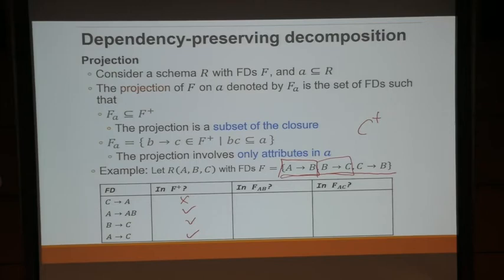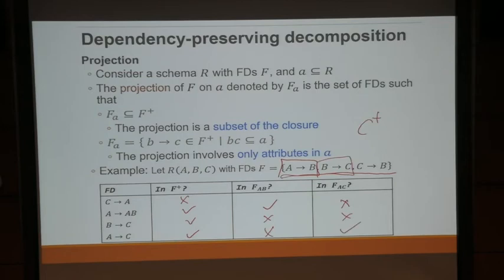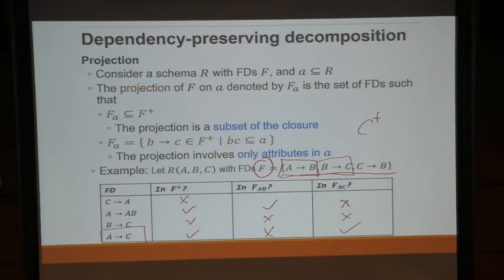The last example is very important: A to C is not in the original F, but it is implied by F and is in F+. Once you decompose the fragments in a dependency-preserving way, this one is preserved. So A to C can still be preserved even though your decomposition may not involve AC as a single table. I'll show you an example where a functional dependency not in the original F, not in any fragment, is still going to be enforced — that's the magic of dependency-preserving decomposition.